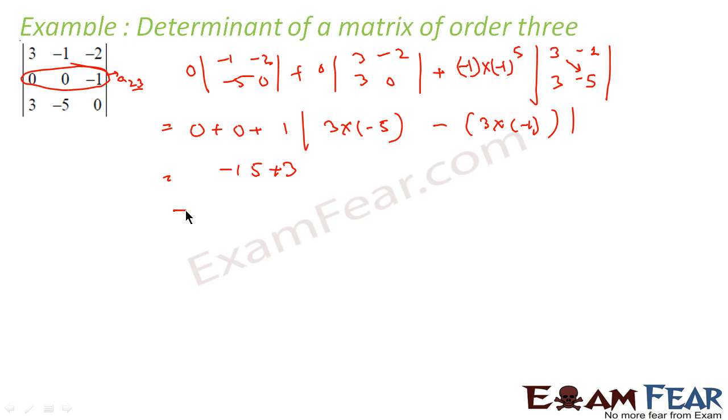So what I have done? I found that row 2 was having maximum number of zeros, so I expanded this along row 2. The first element becomes 0 into this, again 0. This is 0 into this, again 0. This minus 1 into minus 1 to the power 5, a to the power 2 plus 3. See here also, you have to do minus 1 to the power. This is a 1 3.